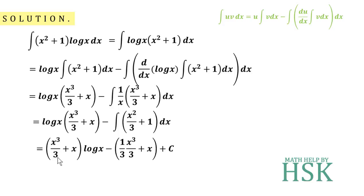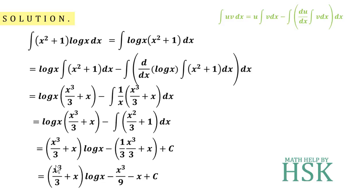This equals (x³/3 + x)·log(x) minus the integration of (x²/3 + 1), where the integral of x² is x³/3 and the integral of 1 is x, plus the constant c. Opening the bracket, the first term stays as x³/3 + x·log(x), minus x³/9 — you can see that on opening the bracket the minus sign appears — minus x + c. This is the required answer.